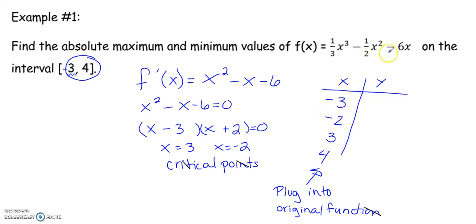You're going to plug negative 3 in this equation. When you plug negative 3 into the original equation, you're going to get 4.5. And then plug negative 2 in, you're going to get 7.333. Plug 3 in, you're going to get negative 13.5. And plug 4 in, you get negative 10.667.